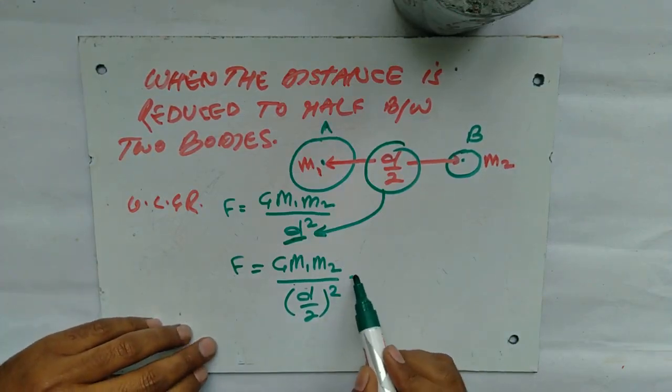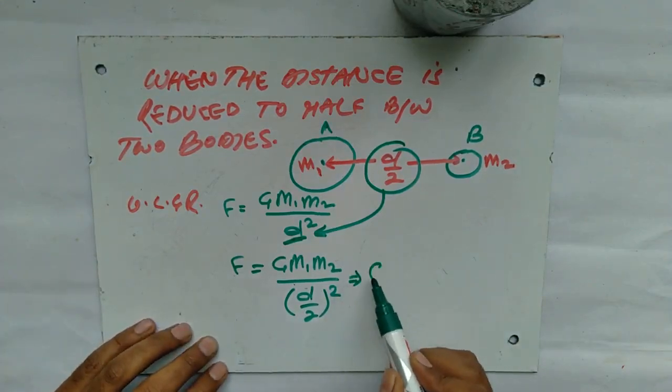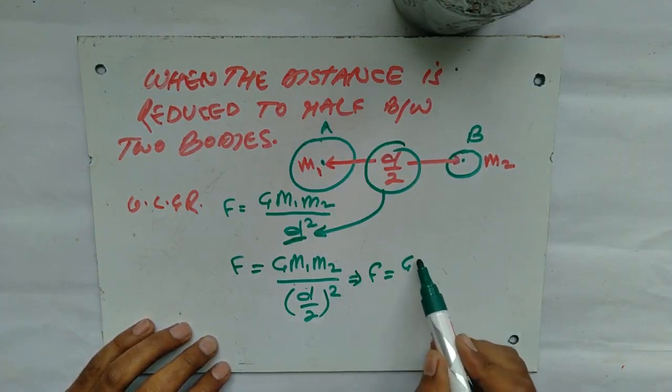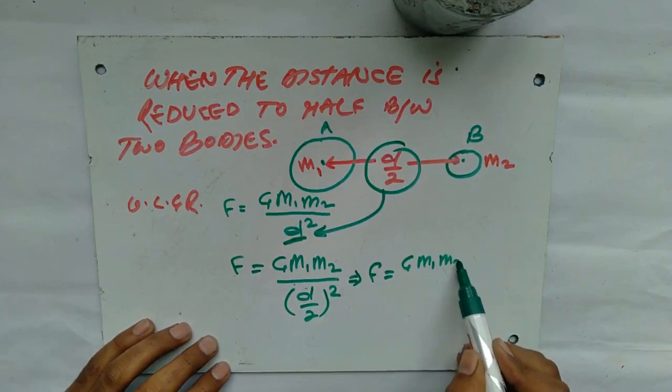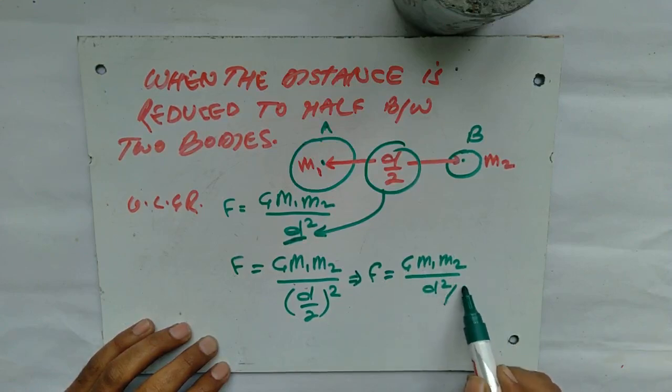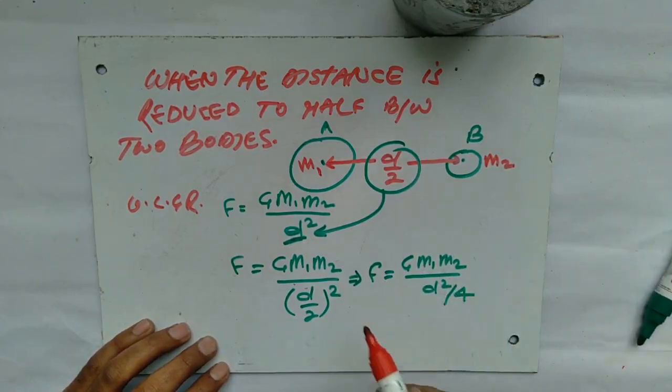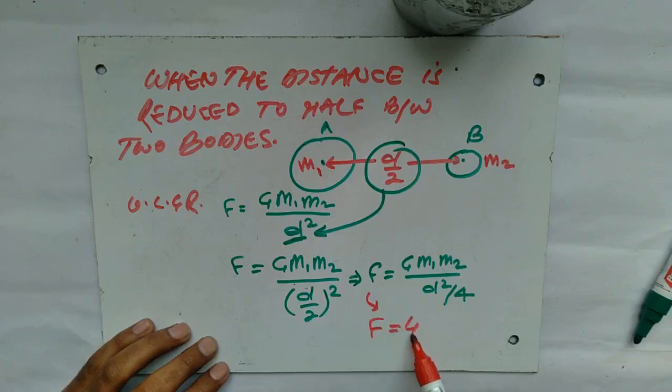Further simplifying it, we would have F equals to G m1 m2 upon d square upon 4. And finally, we would get F equals to 4 times of G m1 m2 upon d square.